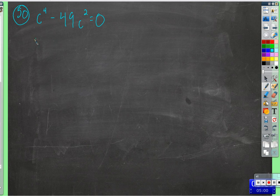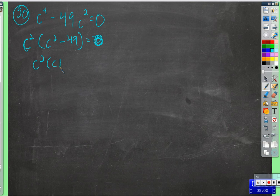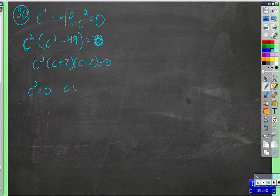Next equation: factor out the biggest common factor, which is C squared, leaving C squared minus 49. This is a difference of squares. So: C squared times C plus 7 times C minus 7 equals 0. Now we have it in factored form. Either C squared equals 0, or C plus 7 equals 0, or C minus 7 equals 0. So C equals 0, C equals negative 7, or C equals positive 7.